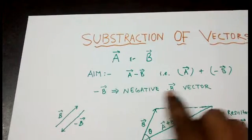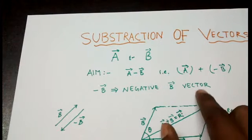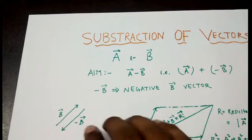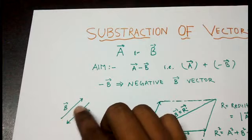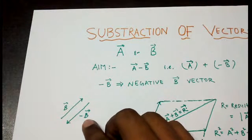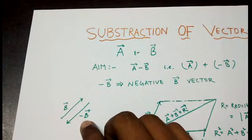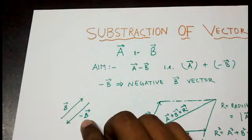What is minus B? Minus B is the negative B vector. This means any vector, suppose that B is the vector, if its direction is reversed, only direction is reversed, then it will be called the negative B vector.